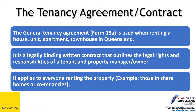The Form 18A is a legally binding contract between yourself and the property owner. Our agency manages the property on behalf of the lessor. The General Tenancy Agreement is used when renting a house, unit, apartment, or townhouse in Queensland, and it is a legally binding written contract that outlines the legal rights and responsibilities of the tenant, the property owner, and our agency on behalf of the owner.